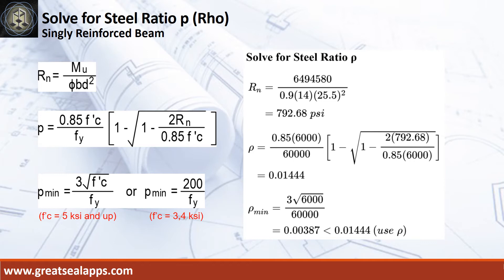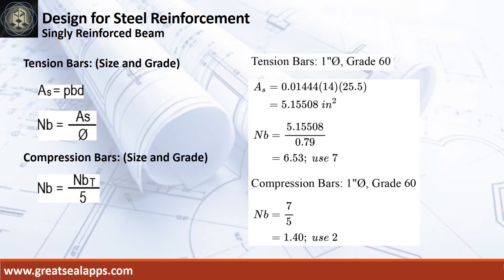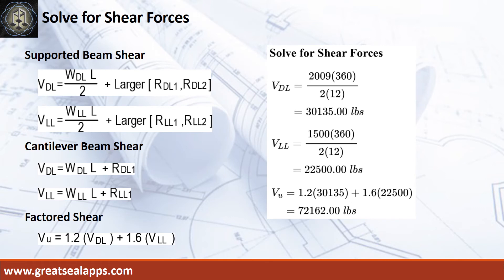The area of steel for tension bars is 5.15508 square inches. The number of bars for 1 inch diameter: the number of tension bars is 7. The number of compression bars is 2.